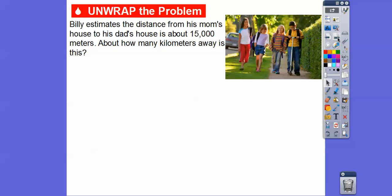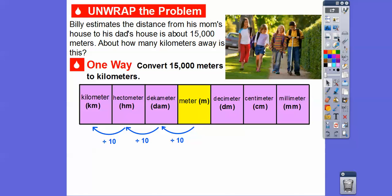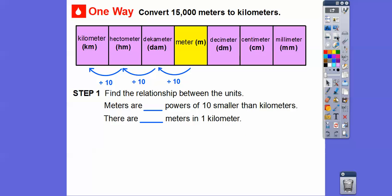Billy estimates the distance from his mom's house to his dad's house is about 15,000 meters. About how many kilometers is that? We're going to convert 15,000 meters to kilometers — going from a smaller unit to a larger unit, so we divide by 10. Meters are three powers of 10 smaller than kilometers, so there are 10 to the third — 1,000 — meters in one kilometer.